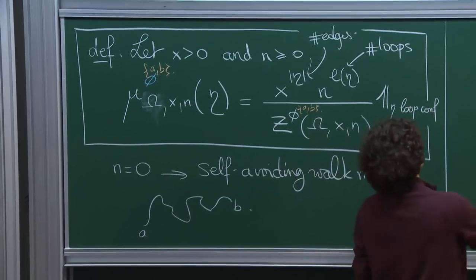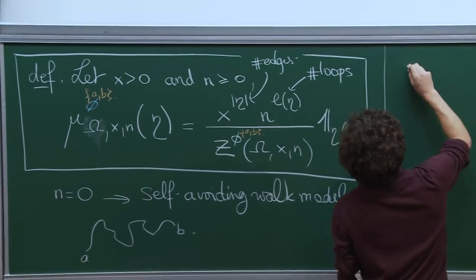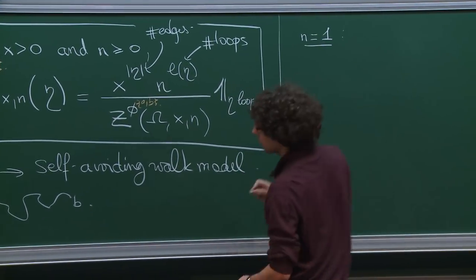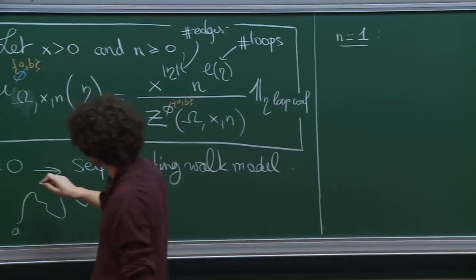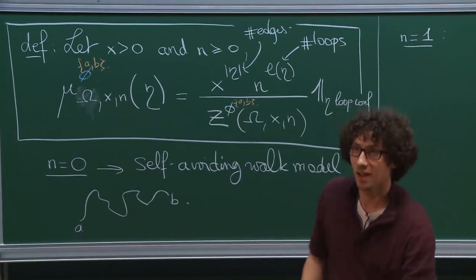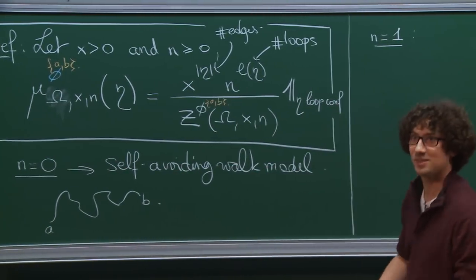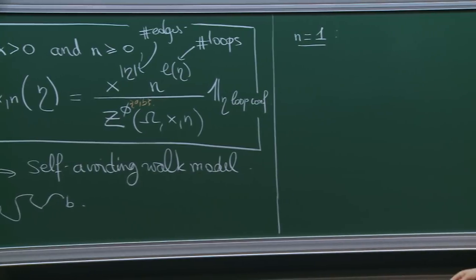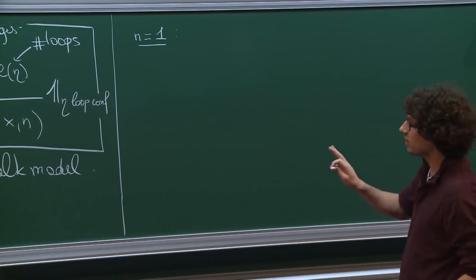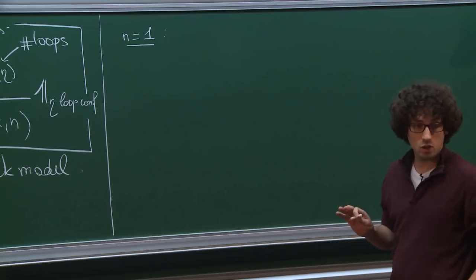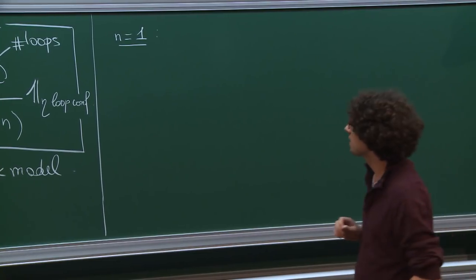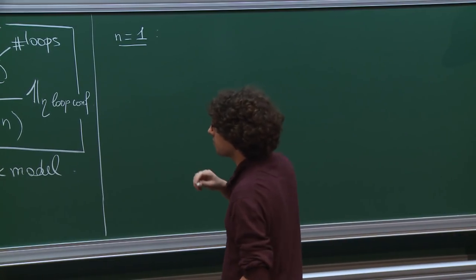There is another case of interest, which is N equal 1. Here it's a little bit more subtle, but because Dima is going to discuss this at some point, I will try to give a few more details. So here it's a connection to the Ising model.